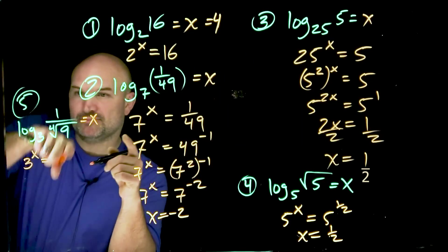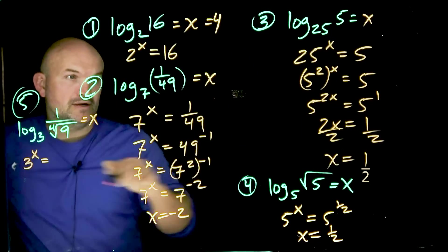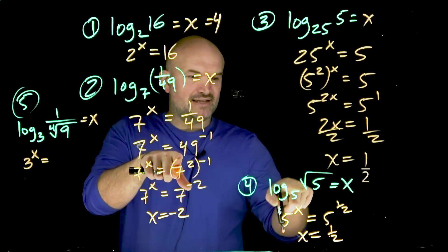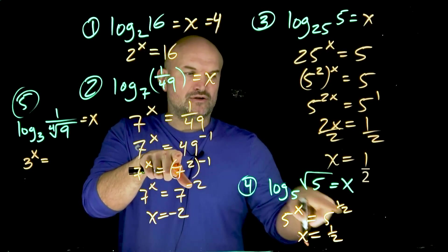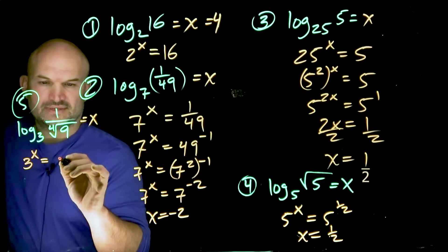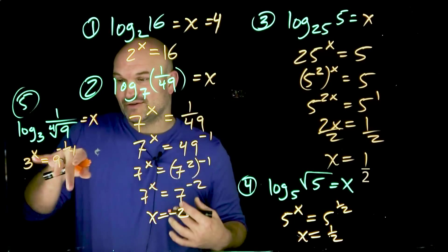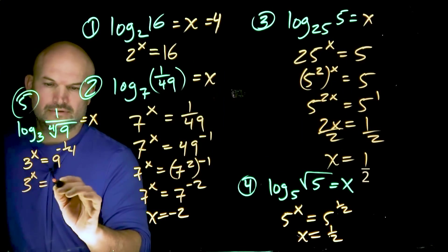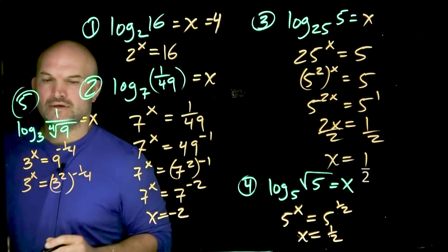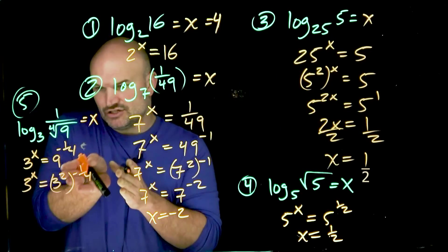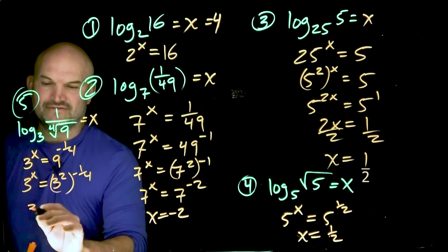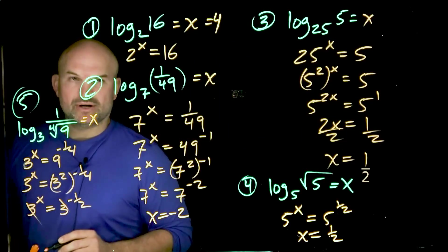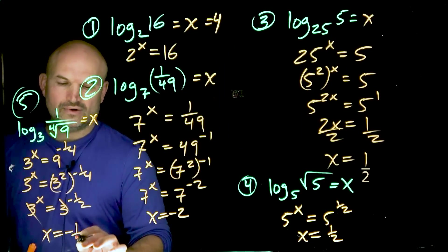If you have this in the denominator and you rewrite it in the numerator, it's going to be negative. And instead of rewriting this as a square root or a radical, I'm going to rewrite it as a rational power. Now, I don't have them to be the same basis, but I can rewrite 9 as 3 squared. And now I can multiply this 2 times negative 1/4 is going to be negative 1/2. And now you can see my one-to-one property works and I get x equals negative 1/2.